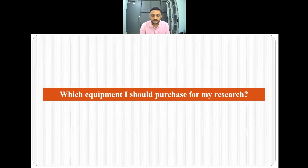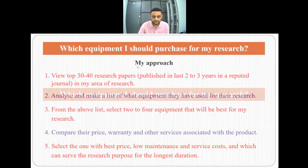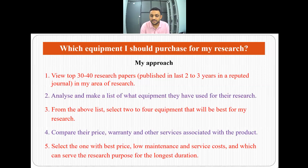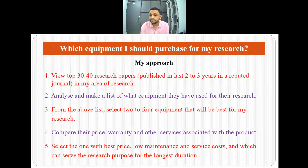Often we confuse ourselves about which equipment to purchase for research. My approach is to first review the top 30–40 research papers published in the last two to three years in a reputable journal in my area of research, then analyze and make a list of what equipment was used. From that list, I select two to four pieces of equipment best suited for my research, then compare their price, warranty, and other services.